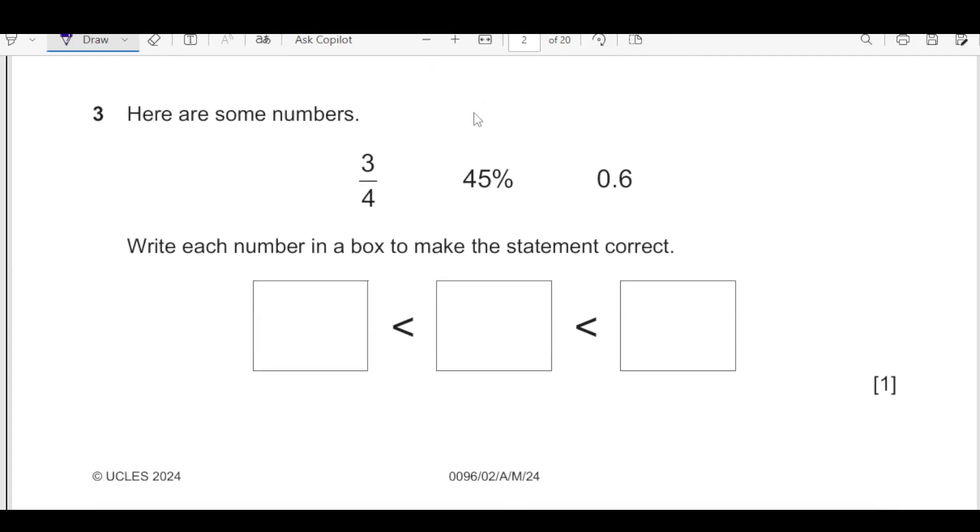Number 3 here are some numbers 3 over 4, 45 percent, 0.6. Write each number in box to make the statement correct. First of all you need to know you can easily use calculator 3 divided by 4. I got here 0.75 and 45 percent we are going to get 0.45 and 0.6 is already in decimal. Now you see the whole part is 0 here everywhere. So we are just going to compare the decimal part.